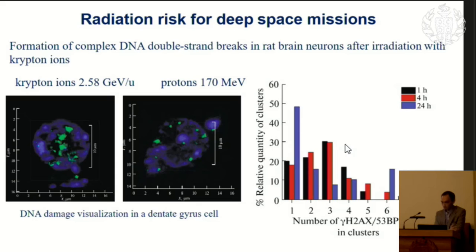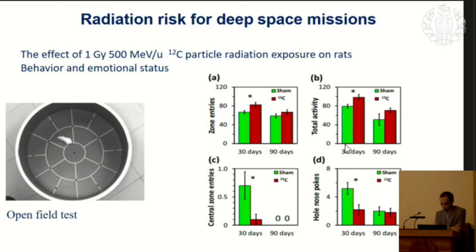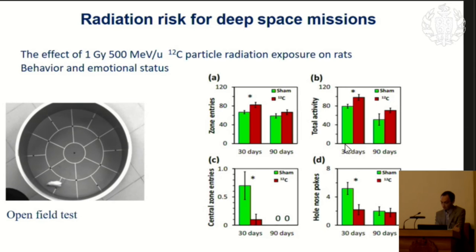Most of the cells will eventually die or produce very complex mutations and chromosomal aberrations. How do these molecular events affect the normal performance of the brain? A lot of experiments have been done, mostly on rodents. Different behavioral test systems reveal that there will be a permanent decrease in normal behavior and emotional status of laboratory animals after irradiation. But we might wonder if the animal model is good enough to predict the very complex performance of the brain.